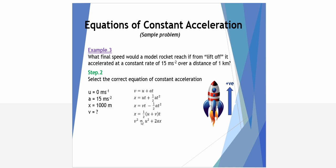We look at our equations and only one of them will have U, A, X and V and it is our final equation. V squared equals U squared plus 2AX.